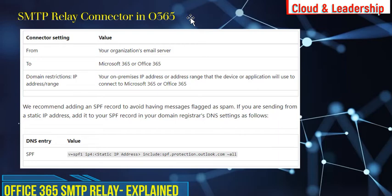For the SMTP relay connector in O365: to establish this type of SMTP relay connection with your application or devices, you have to create a connector in O365. When you create a connector in O365, you have two options: you can create a connector based on a certificate, or you can create a connector based on a public IP address — whichever is suitable for your environment.